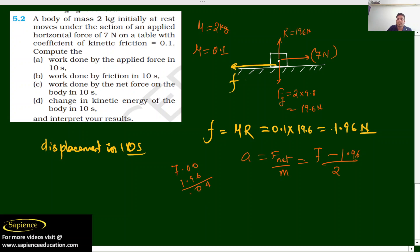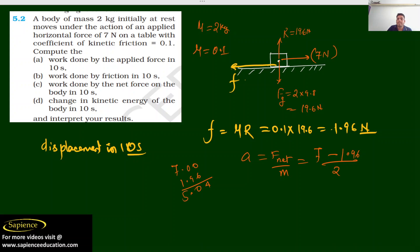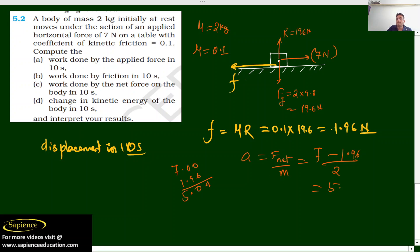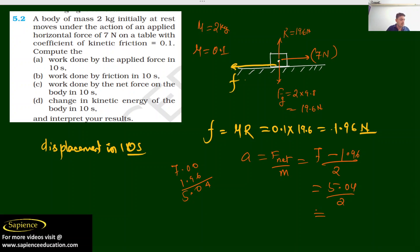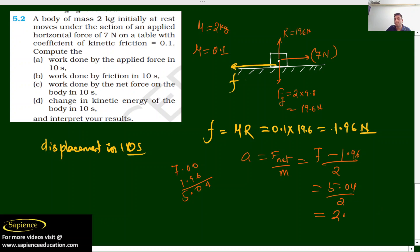So 5.04 divided by 2 gives us acceleration = 2.52 m/s². We have now obtained the acceleration.